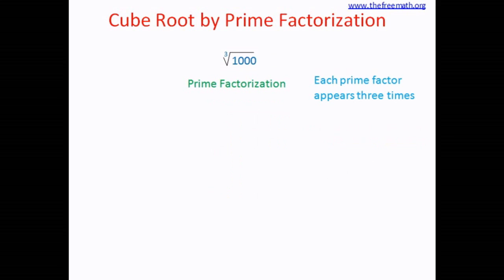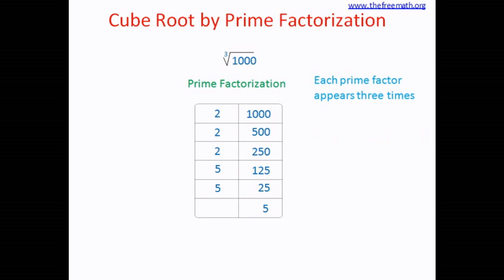Let's take one more example: 1000. So let's calculate the prime factors of 1000. Divide by 2 you get 500, divide by 2 you get 250, divide by 2 you get 125, divide by 5 you get 25, divide by 5 you get 5. 5 is a prime number, so we stop. So here are the prime factors of 1000. Again you group it in triples — there are 3 twos and there are 3 fives. So you multiply 2 by 5, which is 10. So 10 is the cube root of 1000.